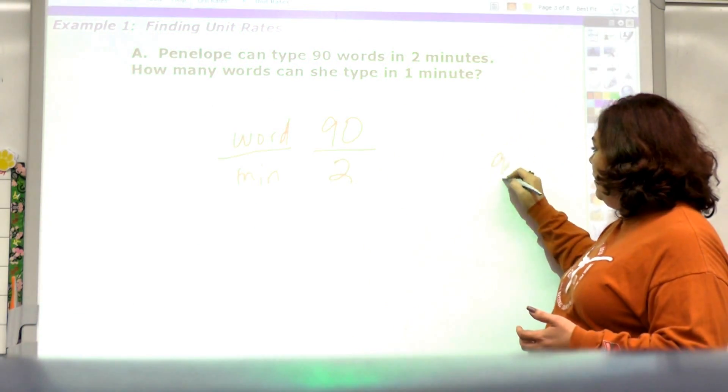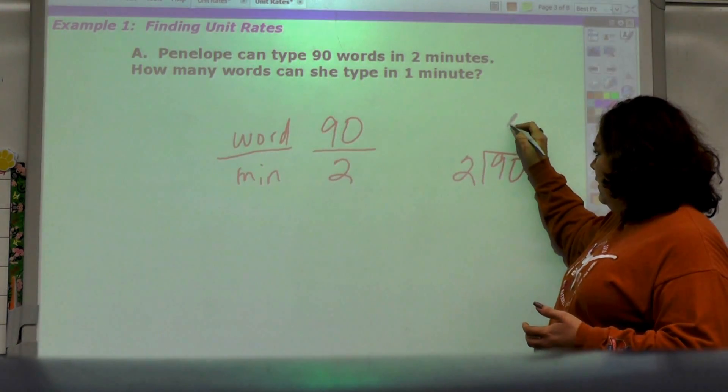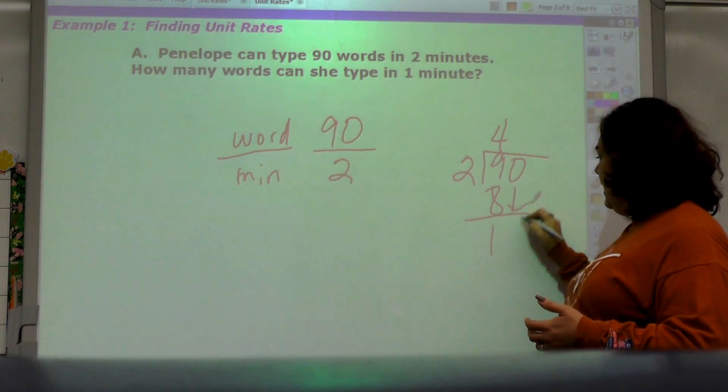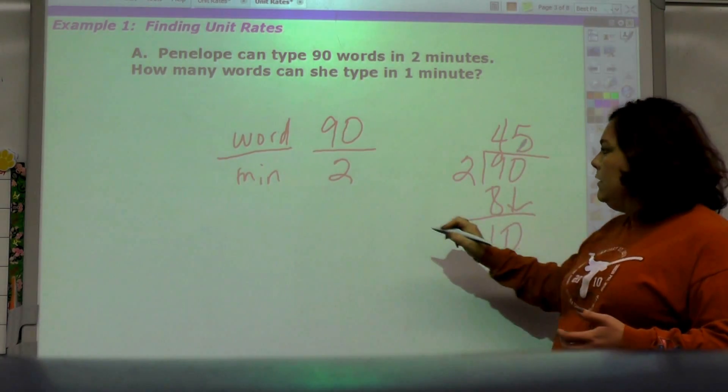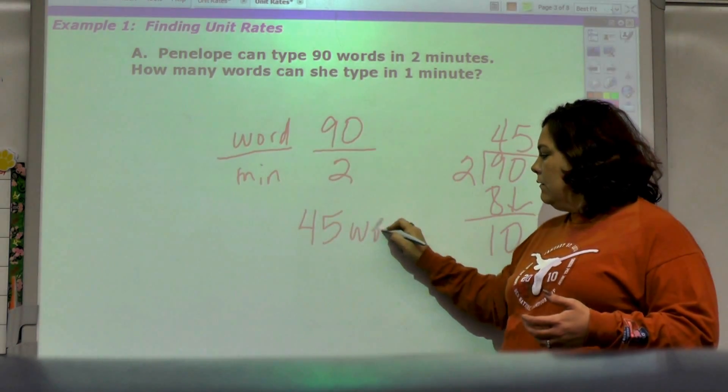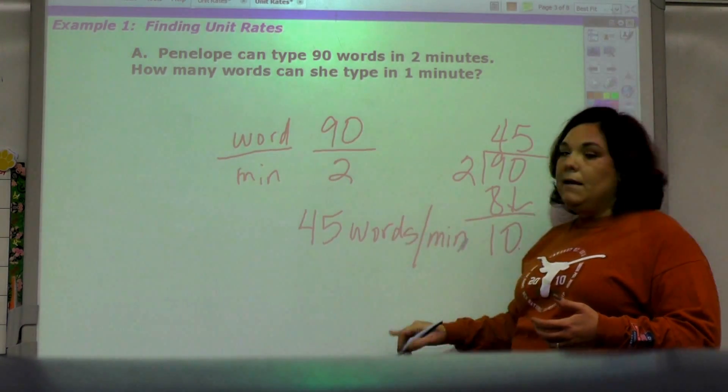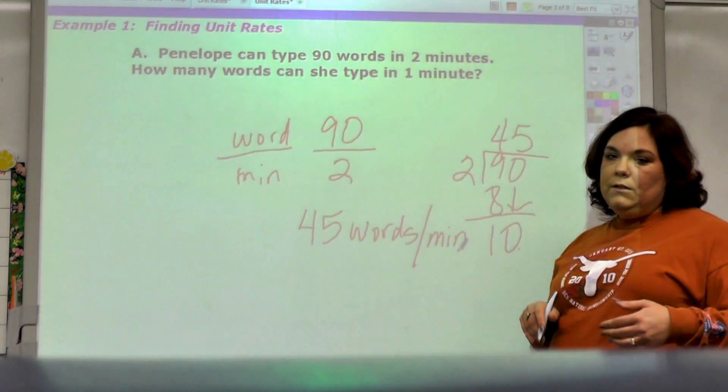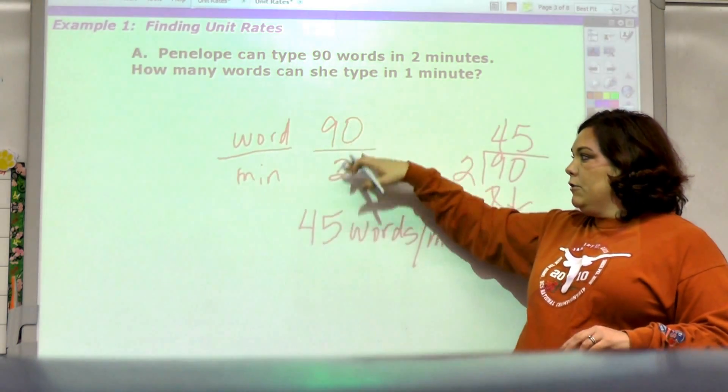So I come over here and say 90 divided by 2, that's 4, bring down the zero, 2 goes into 10 five times. So I still got 45 words, and always label per minute. This line means per, so 45 words per minute.